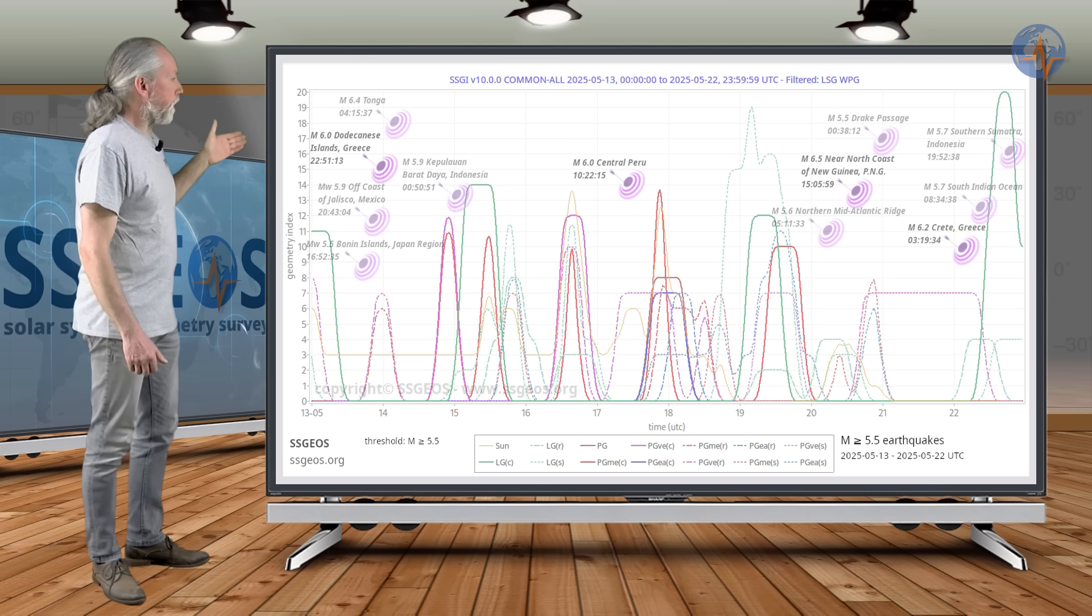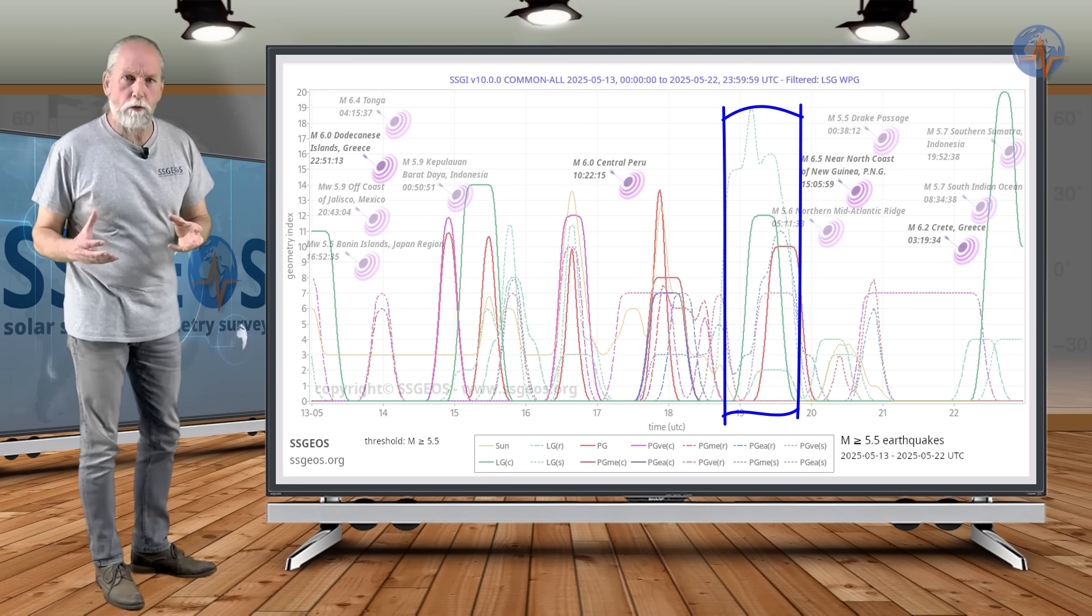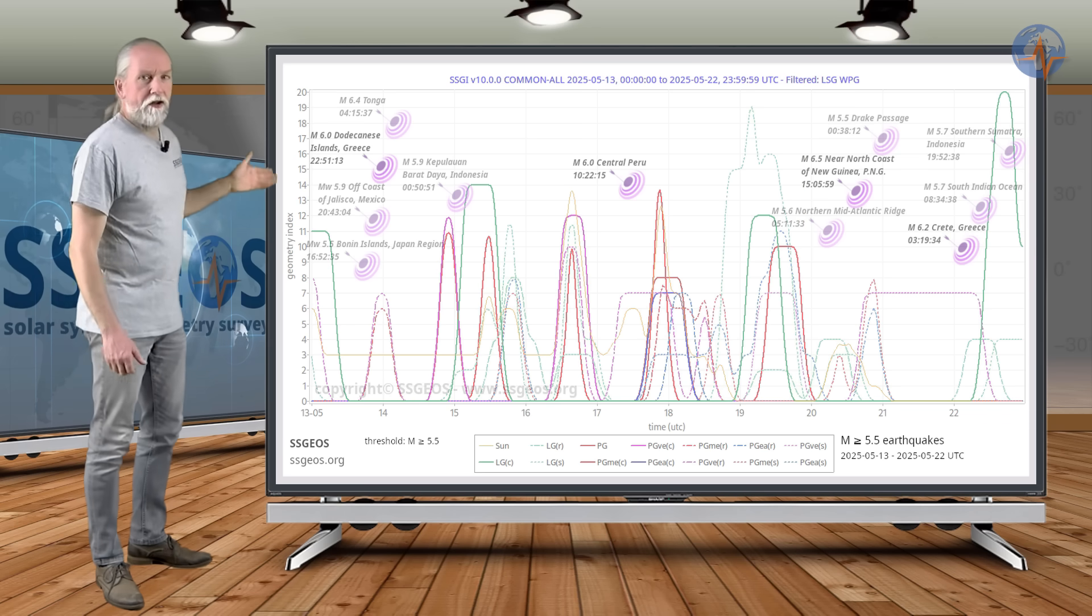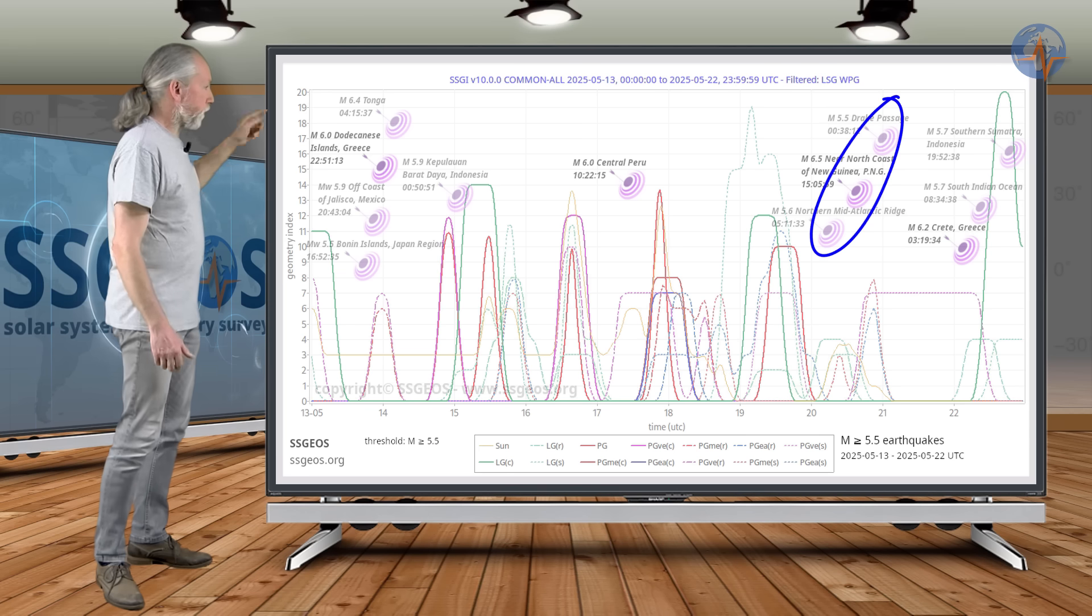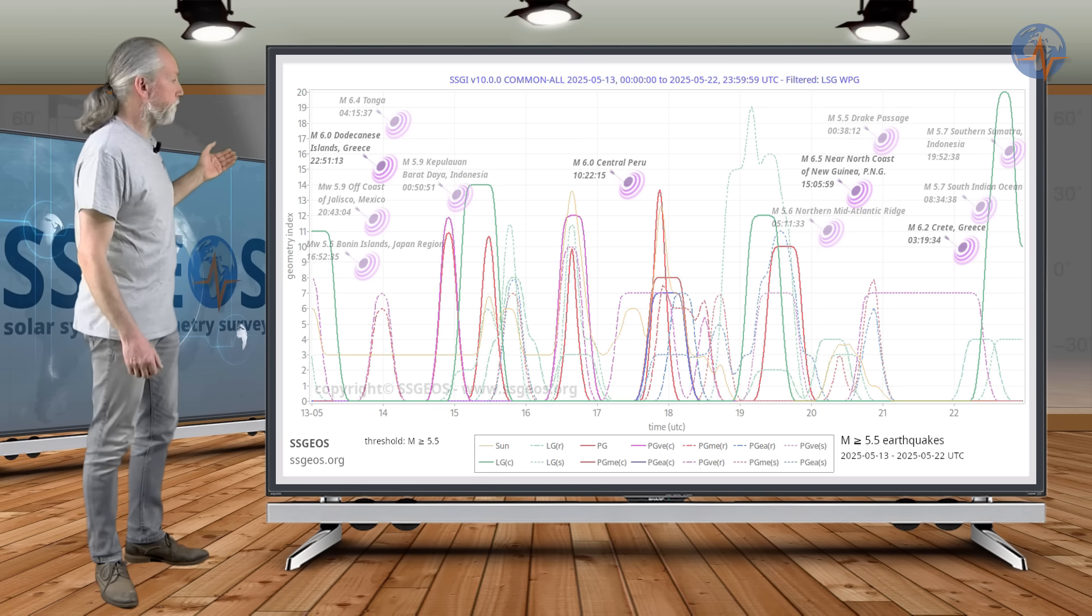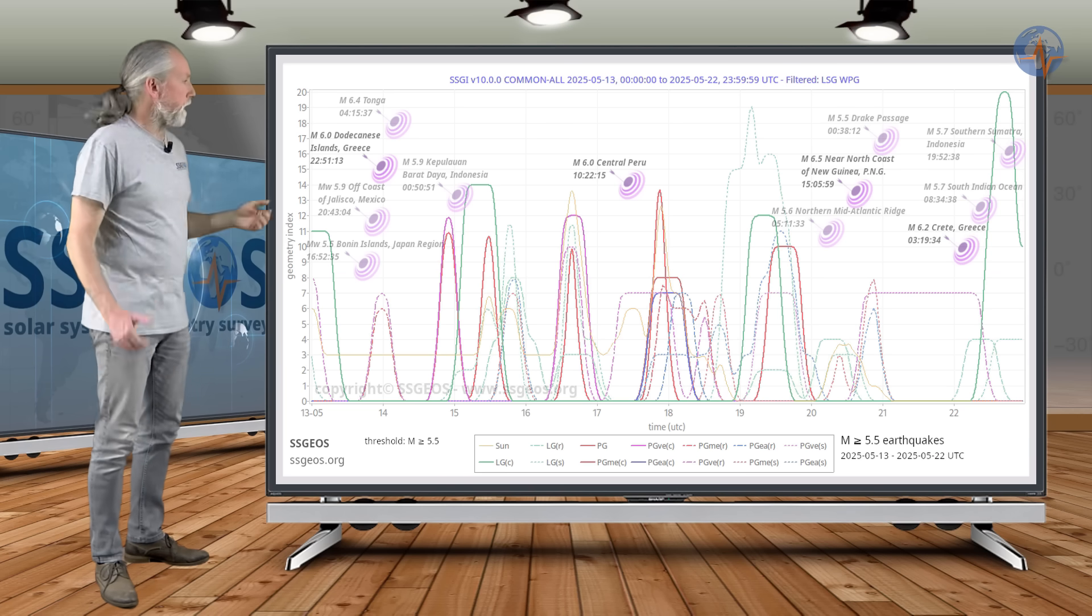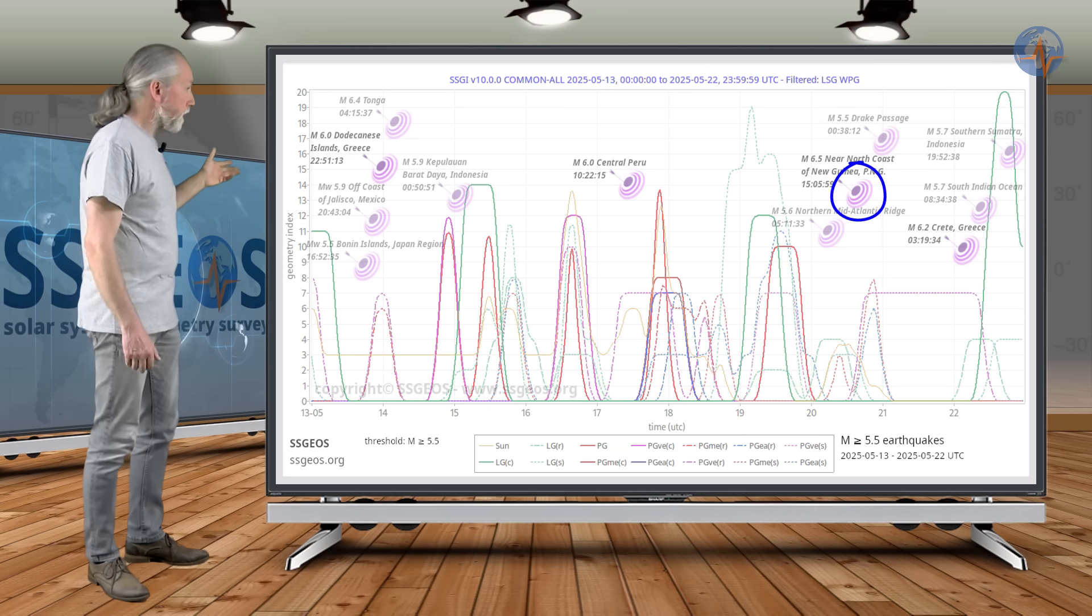And then we have the lunar geometry again on the 19th and it's very interesting that with the lunar geometry, the green peaks, we see the clustering of earthquakes following those peaks. And that happened on the 20th. Like I said on the 20th there could be larger seismic activity because of that lunar geometry and indeed it peaks magnitude 6.5 near the north coast of New Guinea.